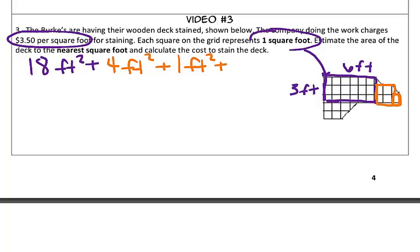Plus, I didn't add any of this down here, so this is another 2 by 2, so that's 4 feet squared. Plus another 1 perfect one in the middle here, so plus another 1 foot squared. So these are my perfect squares that I have.